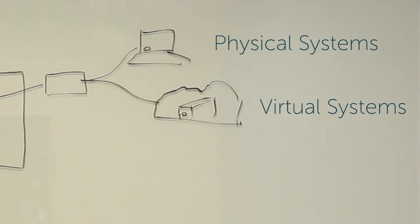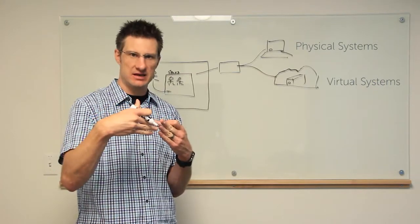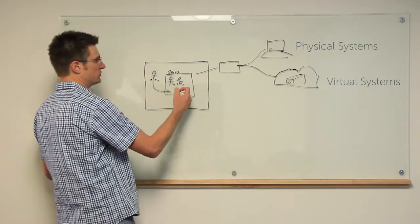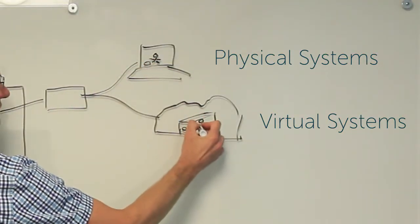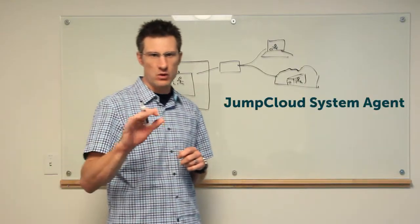JumpCloud utilizes our agent architecture, lightweight, highly encrypted, in order to perform a binding or tethering mechanism to the directory. When you add users to groups or individually, those user accounts then get propagated out to the various systems.